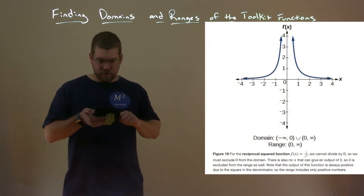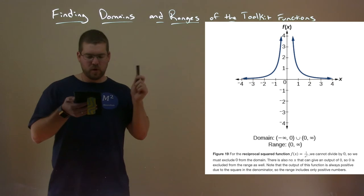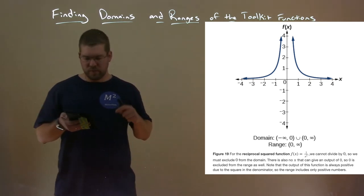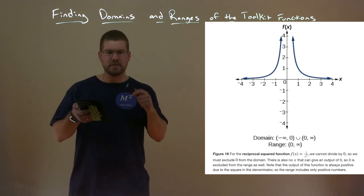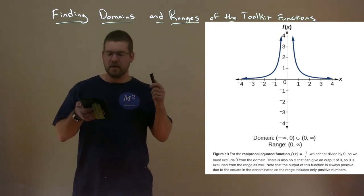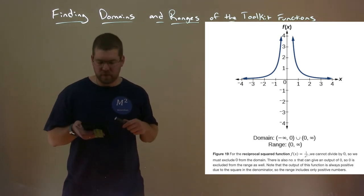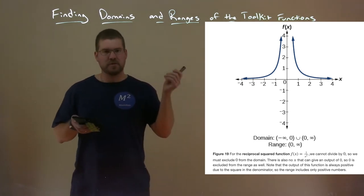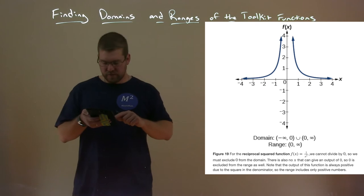The reciprocal squared function is f of x equals one over x squared. Similar to the previous one, the domain is from negative infinity to zero union zero to positive infinity. But since it's squared, nothing is going to be negative, so the range is just from zero to positive infinity, not including zero.